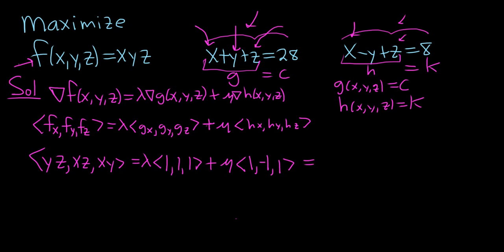We can clean this up. You can skip some steps here. This will be lambda plus mu. You can combine these, lambda plus mu. And the next one will be lambda minus mu. And the last one will be lambda plus mu.